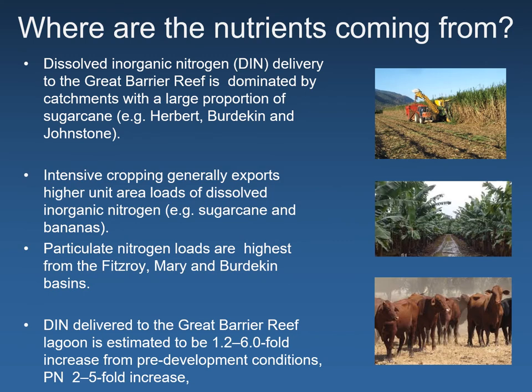Where are the nutrients coming from that we tend to find out in the Great Barrier Reef marine environment, particularly from flood plumes? Dissolved inorganic nitrogen forms are really dominated by catchments with a large proportion of intensive agriculture — commodities particularly like sugarcane and bananas from areas like the wet tropics catchments and maybe the lower Burdekin and Mackay. When it comes to particulate nitrogen loads, they tend to be higher from catchments dominated by rangeland cattle grazing, so catchment basins like the Fitzroy, Mary, and Burdekin River. General estimates are that dissolved inorganic nitrogen, particulate nitrogen, and phosphorus loading has probably increased anywhere from three to six fold since human settlement and land use change throughout these catchments.